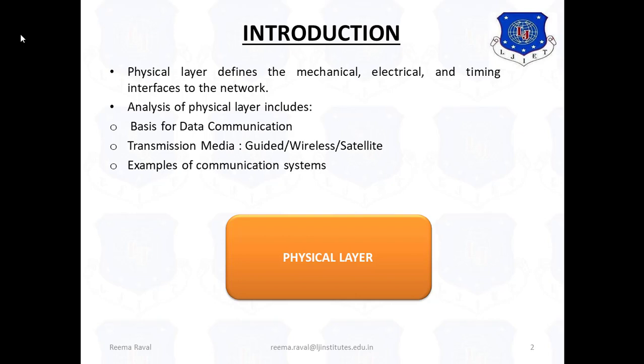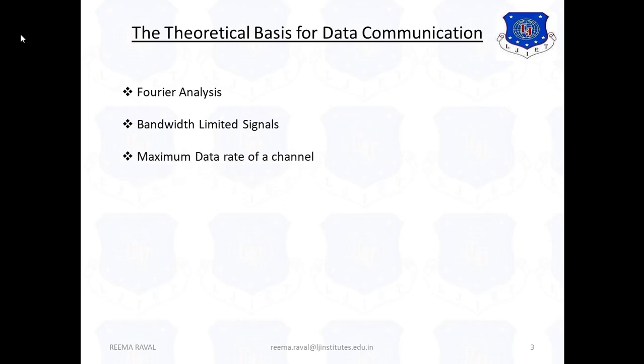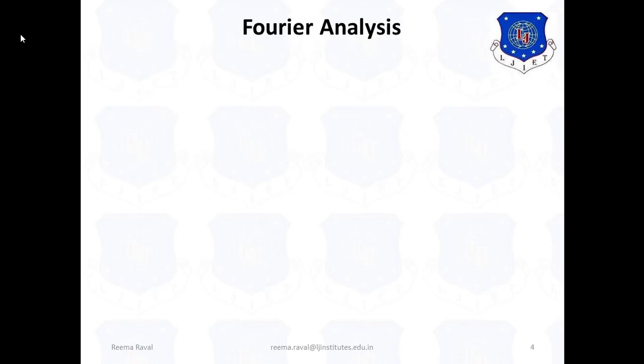We will begin with a Theoretical Analysis of Data Transmission to discover the Basis for Data Communication and then we will cover three kinds of Transmission Media: Guided, Wireless, or Satellite. Now, let us see the theoretical Basis for Data Communication. It includes first one Fourier Analysis, then Bandwidth Limited Signals, and Maximum Data Rate of a Channel. First, let us consider the Fourier Analysis part.